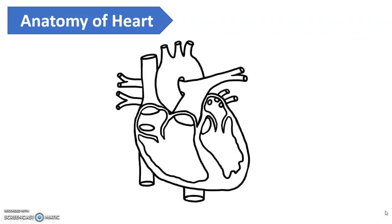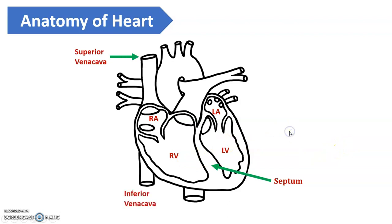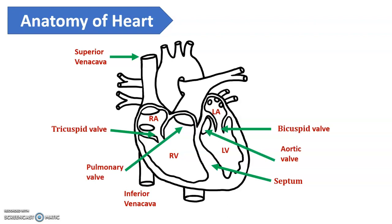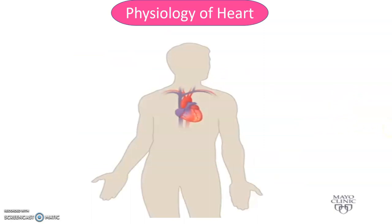The anatomy of the heart includes four chambers with a septum that divides the two cavities. Vessels include the superior and inferior vena cava, and there is the presence of tricuspid, bicuspid, pulmonary, and aortic valves. Pulmonary arteries and veins are also present. The heart contains four chambers, three layers, four valves, and different vessels. In diagrams, blue indicates deoxygenated blood and red indicates oxygenated blood — the right side carries deoxygenated blood and the left side carries oxygenated blood.